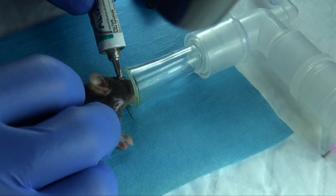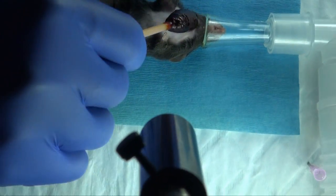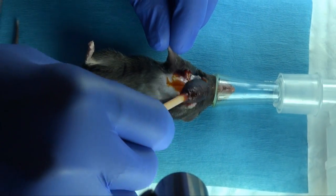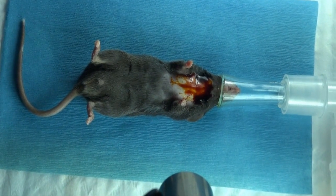Prior to the procedure, apply protective eye ointment bilaterally. Swab the skin with povidone iodine solution, followed by 70% isopropyl alcohol.